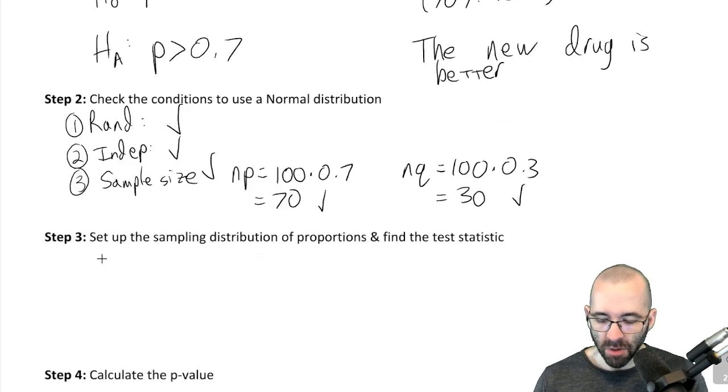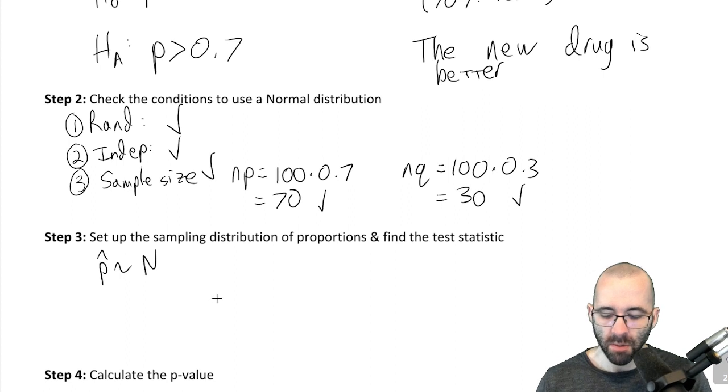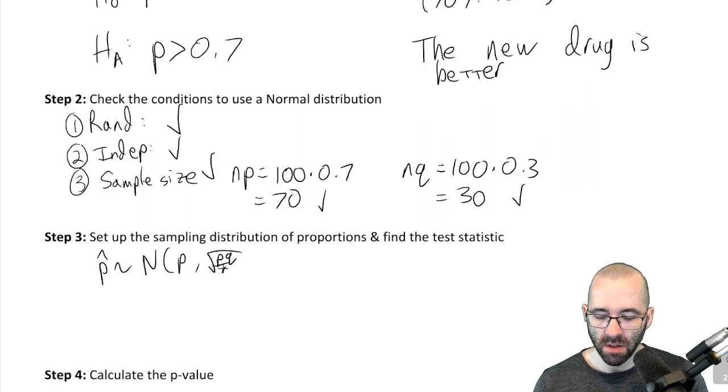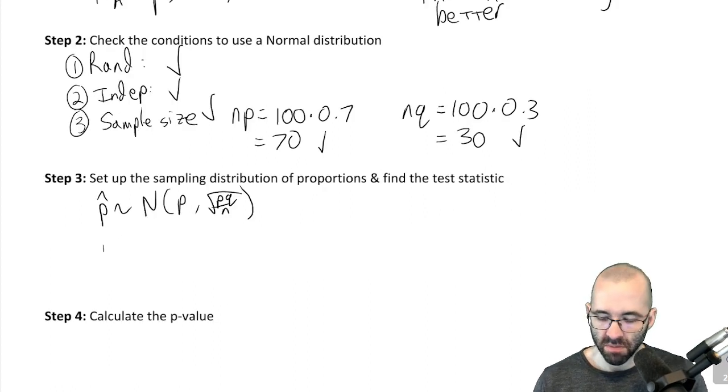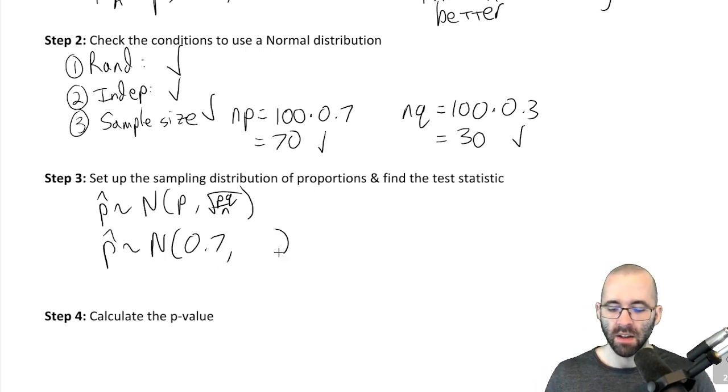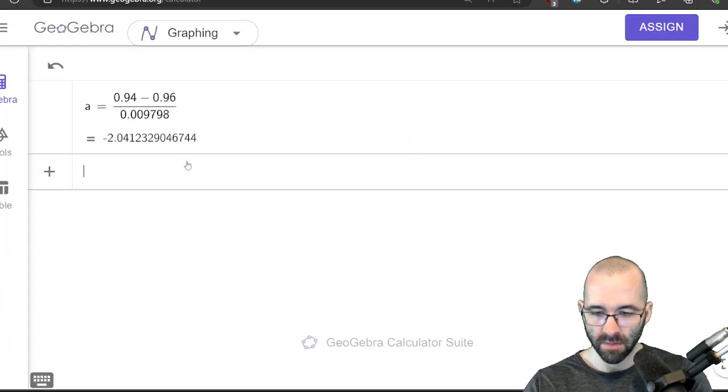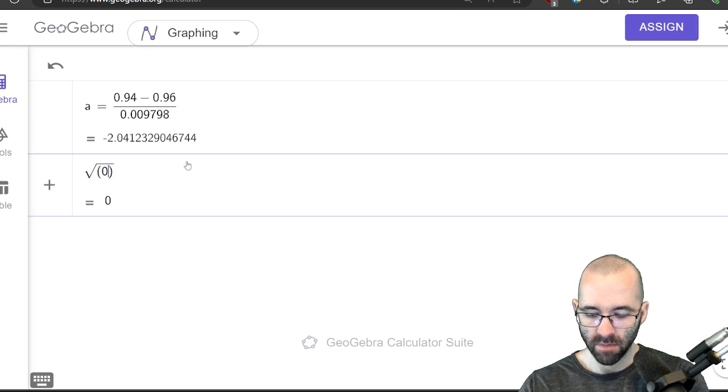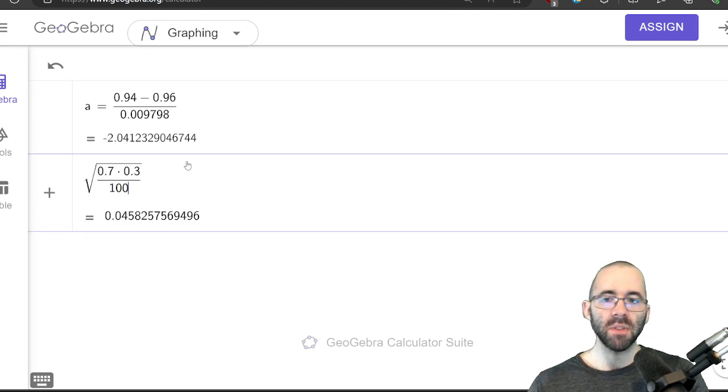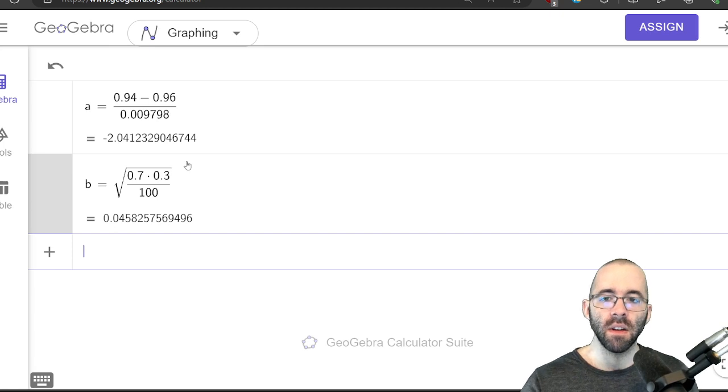Sampling distribution of proportion says that because of that, p-hat, our sample proportion, will be normally distributed with these parameters. Well, p we said was 0.7. Square root of pq over n, we can find that too. Remember our sample size was 100. 0.04583.